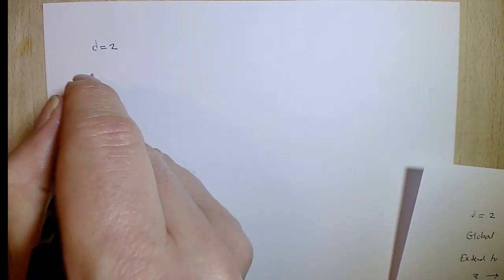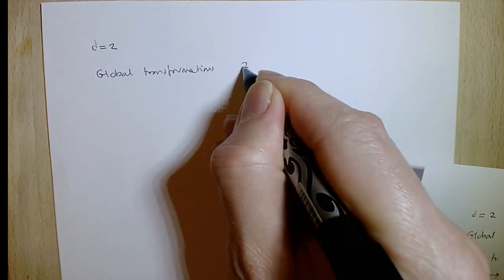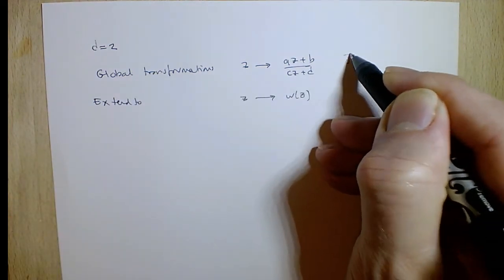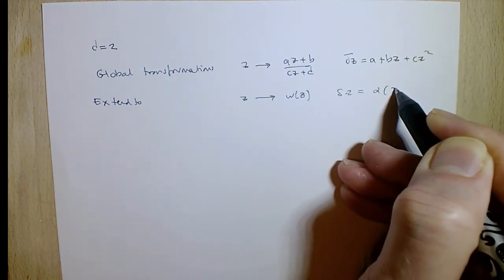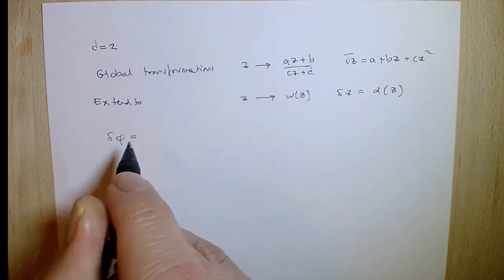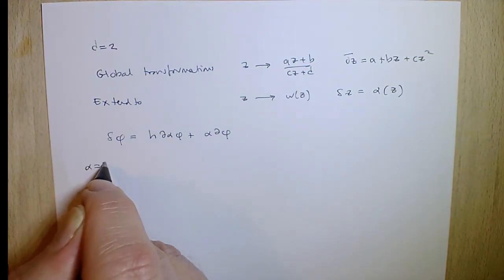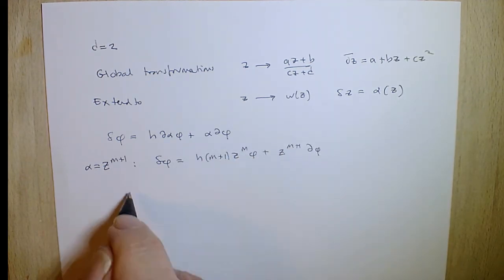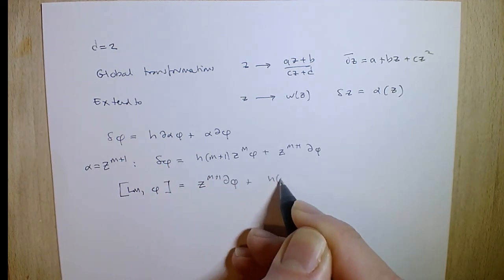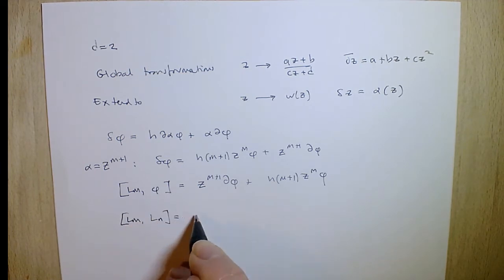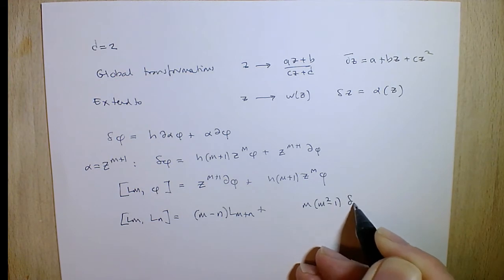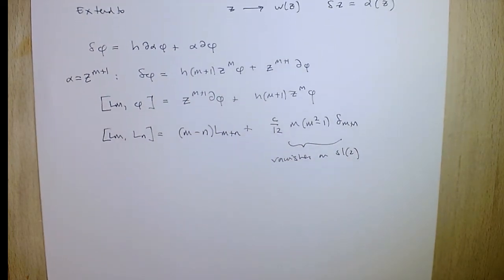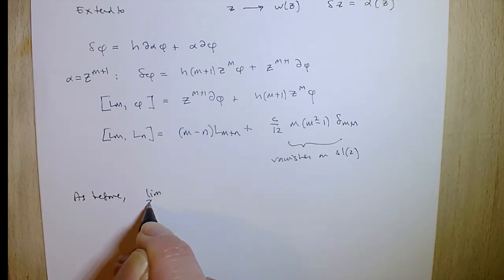In d = 2, global transformations that map the Riemann sphere to itself extend to analytic functions which don't do that — like z goes to z^2, which maps the plane to itself twice. We can still think about them as transformations on regions of the complex plane. The formula for the change in a field doesn't change. Our generator L_m, if the infinitesimal transformation is z^{m+1}, has the same form as L_0, L_1, L_{-1}. What changes is the commutator of L_m with L_n — there's now a central term, and we have the Virasoro algebra.